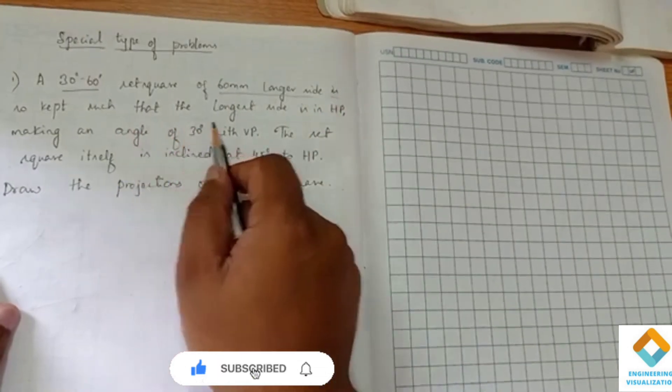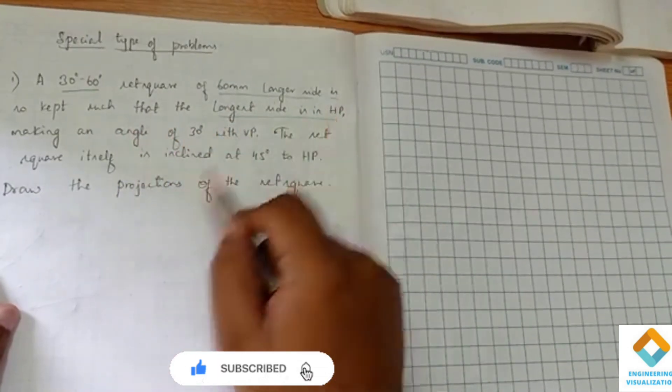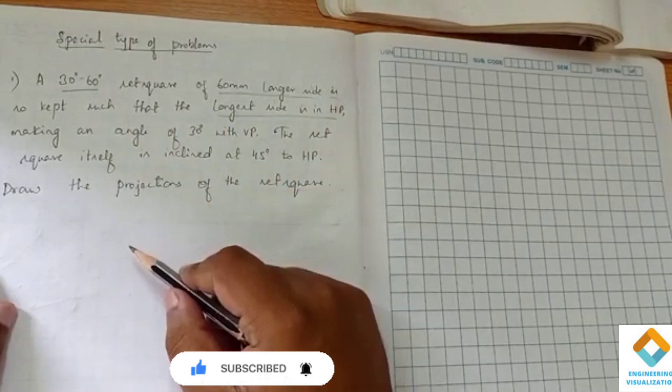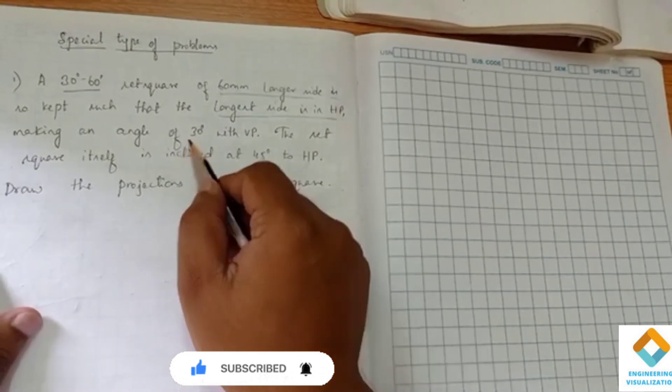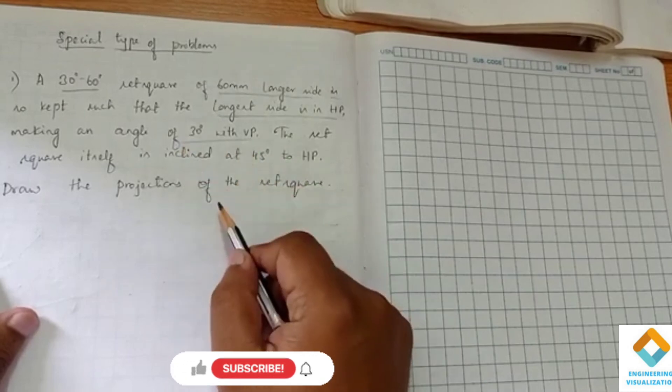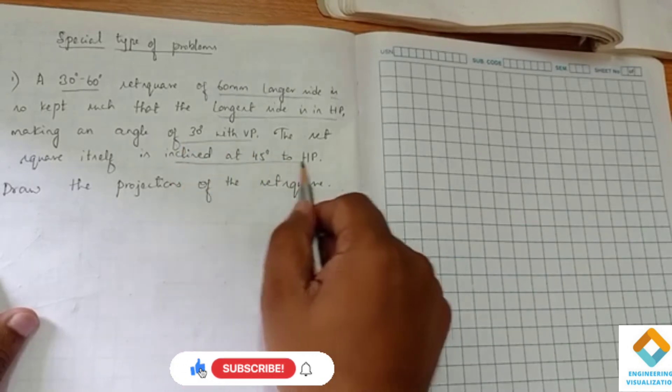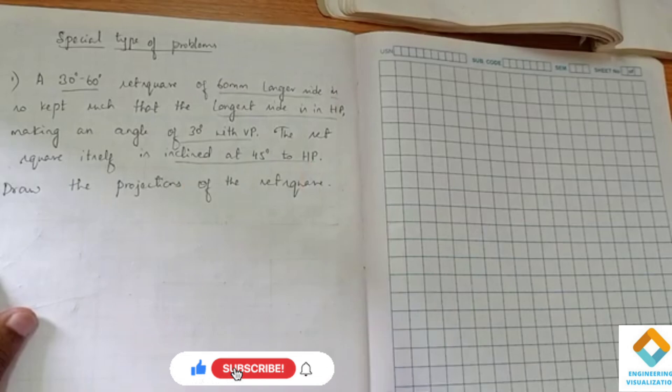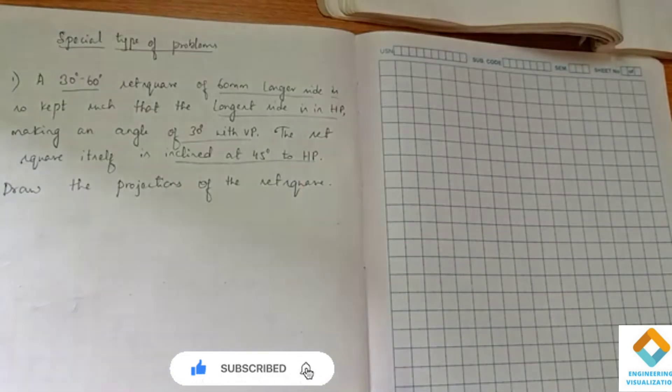We have to keep the longer side in the HP plane, making an angle of 30 degree with VP. The set square itself is inclined at 45 degree to HP. The main thing in this problem is we have to construct a set square. Other than that, it will be similar to your normal type of problem.